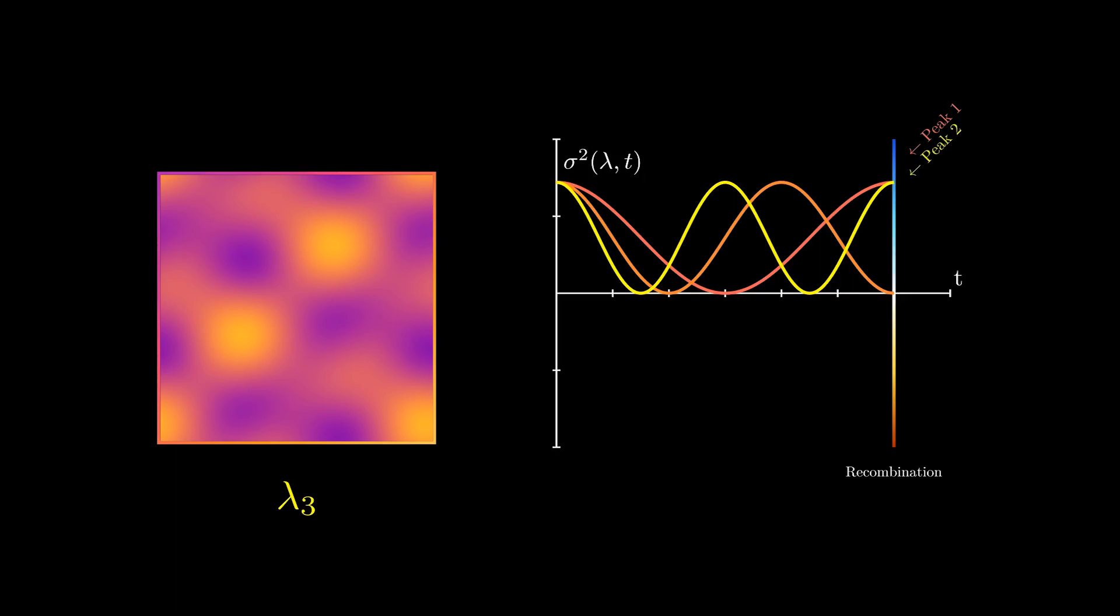The existence of a second peak from wave modes with half the wavelength makes perfect sense then. These waves oscillated twice as fast, so by the time of recombination, they had passed through one full cycle. Waves directly in between these peak modes in their length were passing through nulls at the time of recombination, resulting in the lower power troughs between each peak.